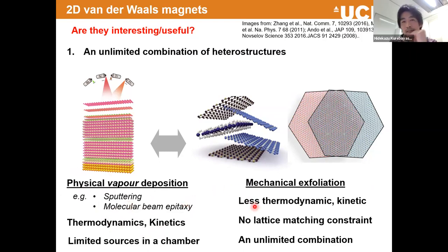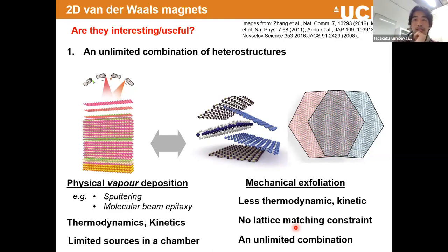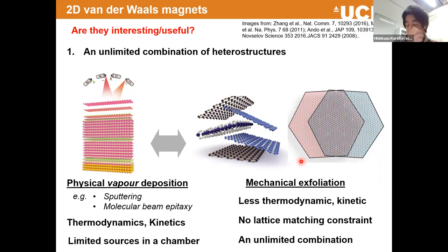If you want truly single-crystal epitaxial growth with conventional techniques, you have to worry about lattice matching, but that concern goes away when we rely on mechanical exfoliation. We can put lots of different materials on top of each other to create really artificial materials by ourselves. Additionally, we can control the rotation between layers — that's one of the really hot topics, for example magic-angle graphene related to electron correlation.